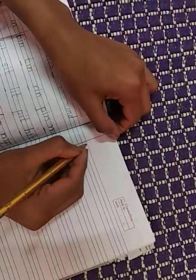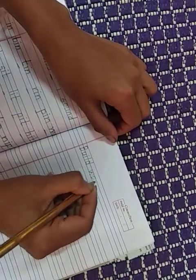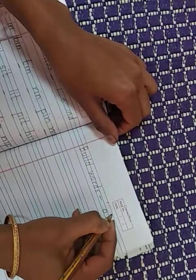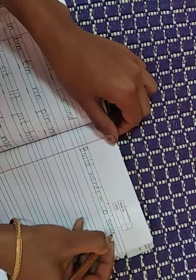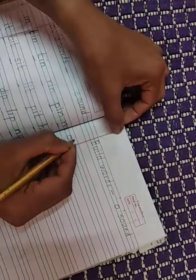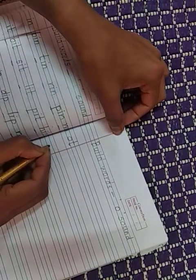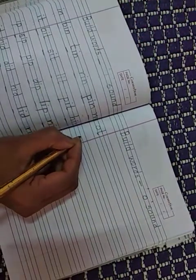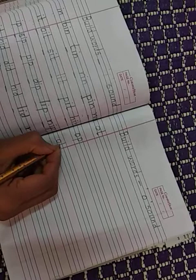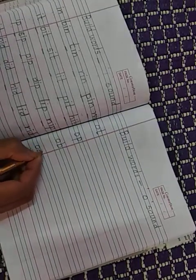Today we will see the build words of O sound. Build words of O sound. Now we will form here: O, T, OT. Then comes O, P, OP. Then O, B, OB. Then O, D, OD.